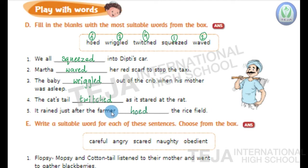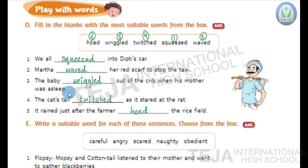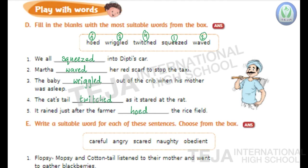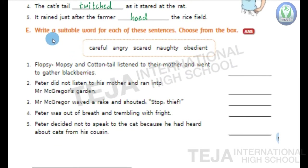Now let us read the fill in the blanks once. First: we all squeezed into the tiny car. Second: Martha waved her red scarf to stop the taxi. Third: the baby wriggled out of the crib when his mother was asleep. Fourth: the cat's tail twitched as it stared at the rat. Fifth: it rained just after the farmer hold the rice field.